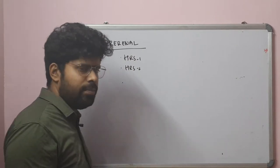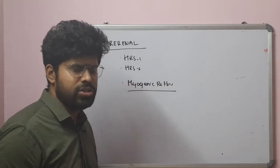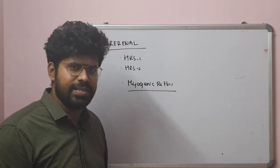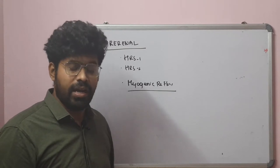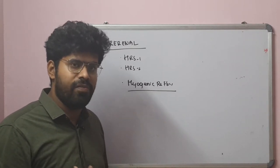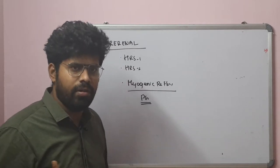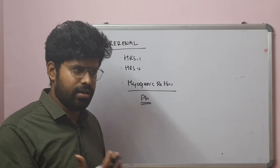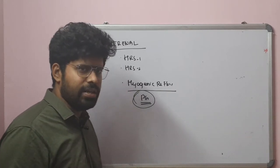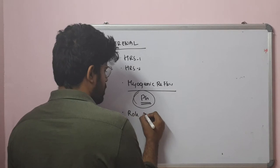The myogenic reflex: when renal blood flow decreases, this is sensed by the renal afferent arteriole, which releases prostaglandins, kinins, bradykinin, and nitric oxide. This causes afferent vasodilation, increasing the glomerular filtration rate. When we give NSAIDs like aspirin or paracetamol, prostaglandin production is affected, leading to decreased afferent vasodilation and decreased GFR. This is the myogenic reflex, mediated by prostaglandins.